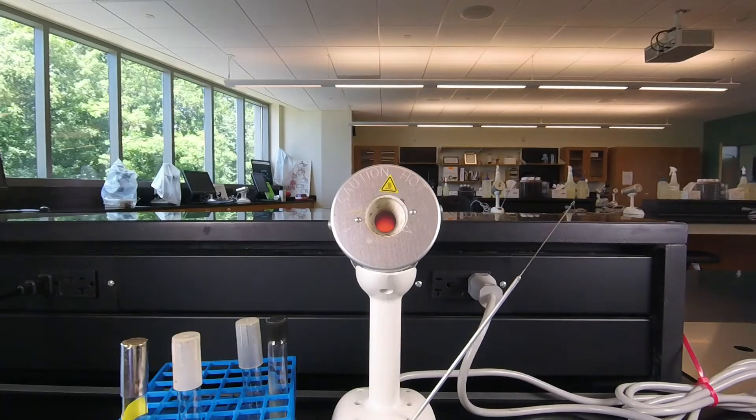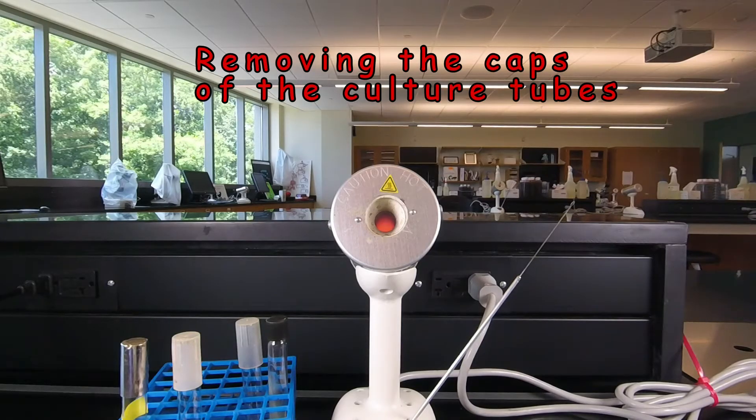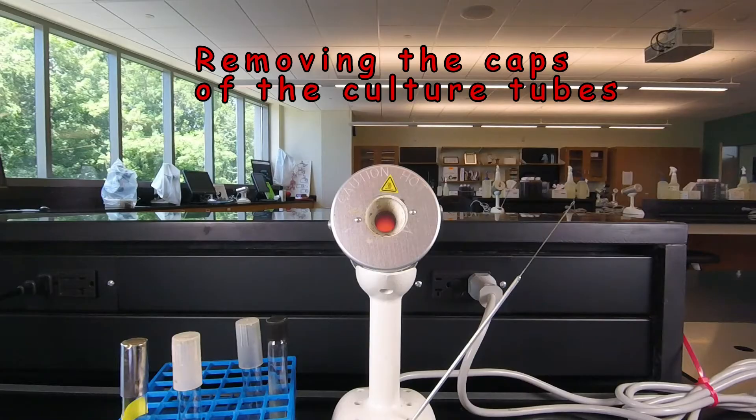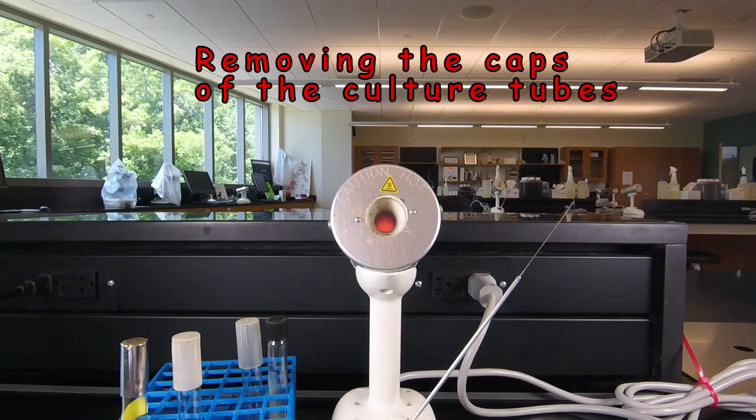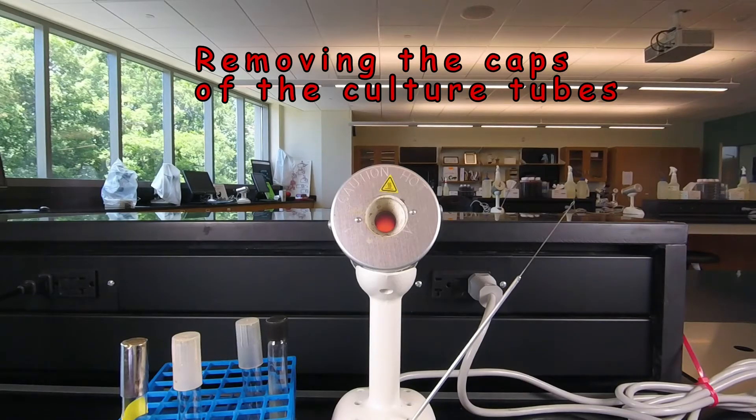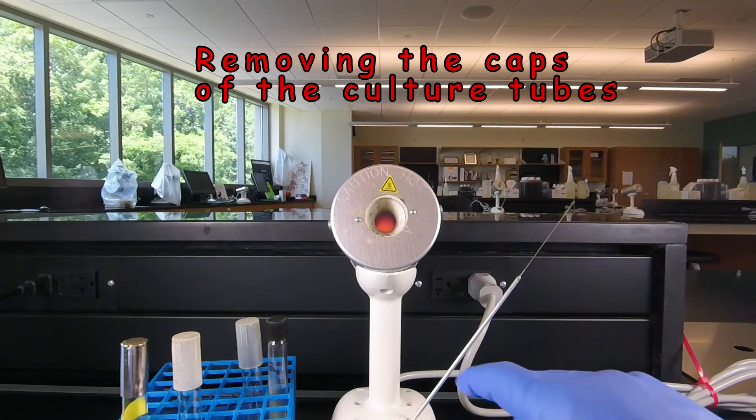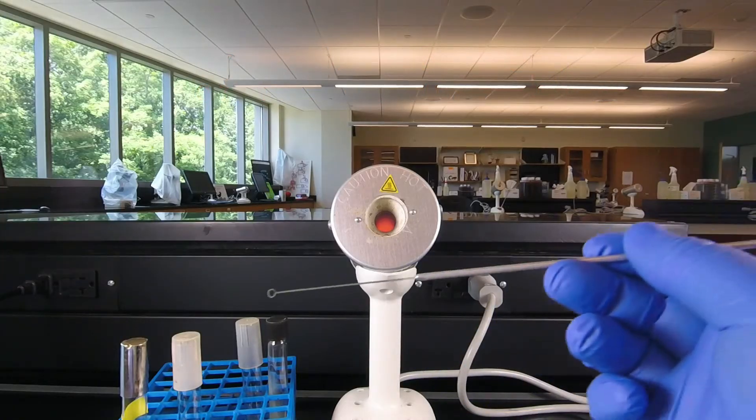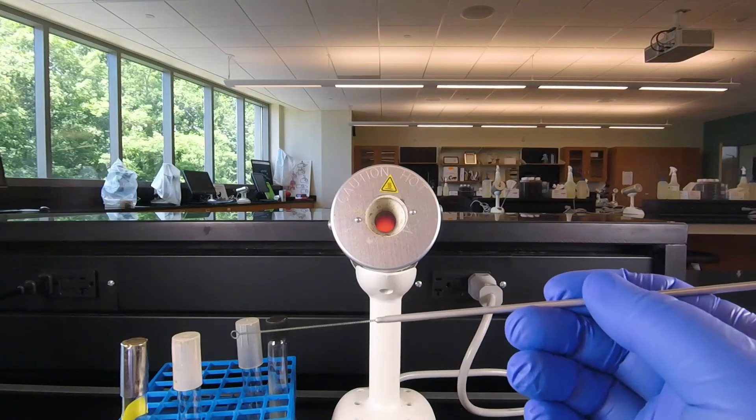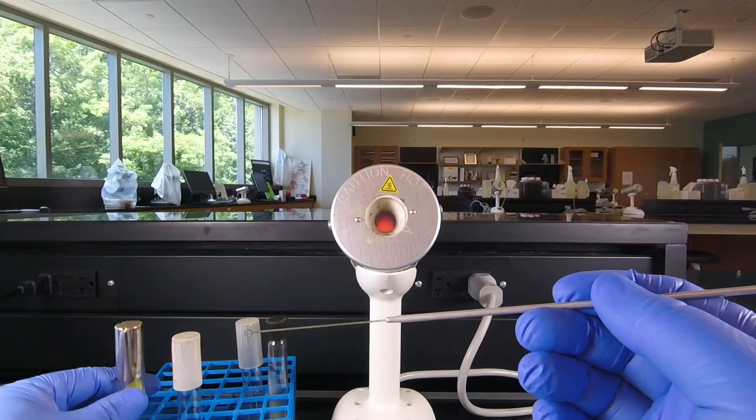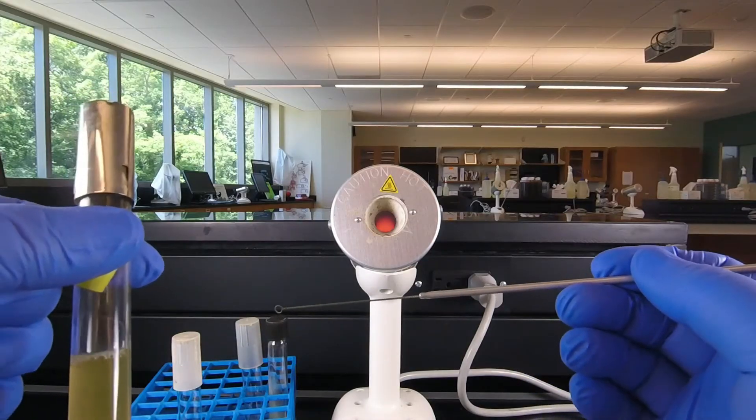Another important tip is how to remove the caps of the various culture tubes we're using to avoid contaminating the cap or contaminating the tube or the contents of the tube. When we do aseptic technique we're going to be holding the inoculating loop in our dominant hand and holding the tube that we're going to be using in our other hand.